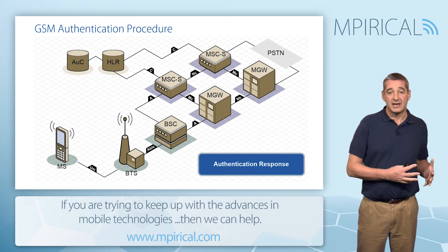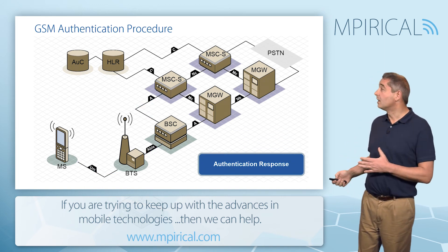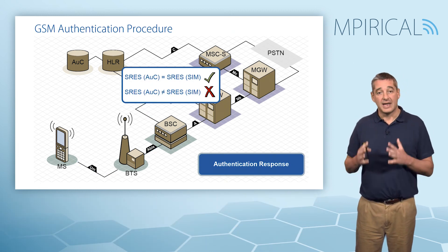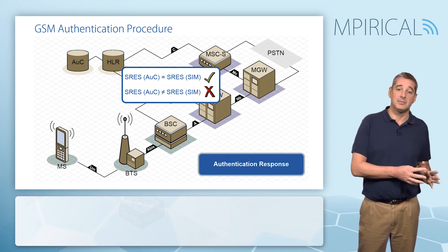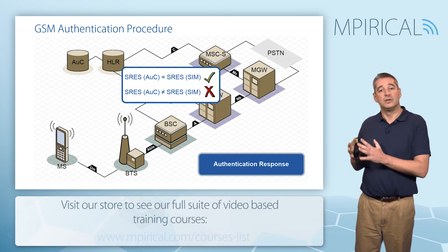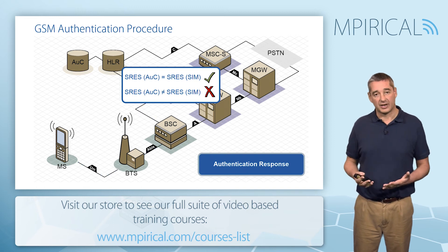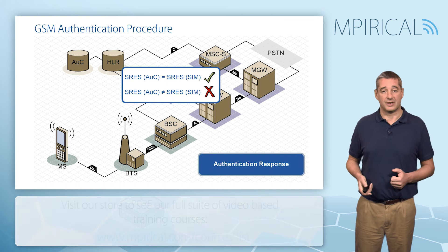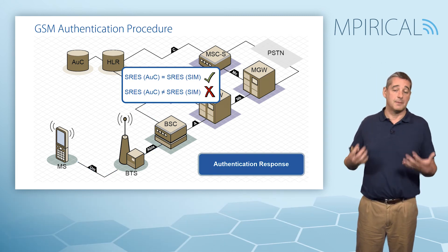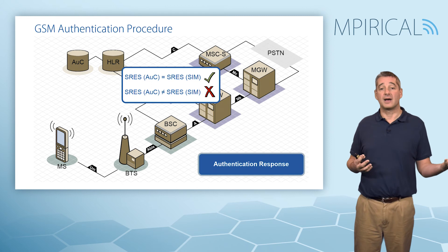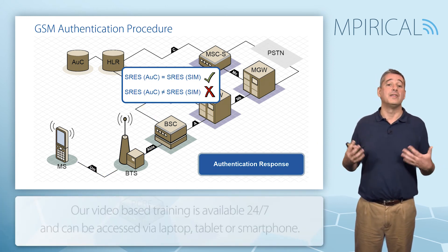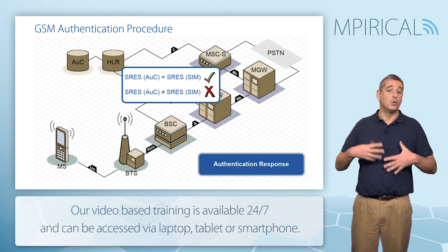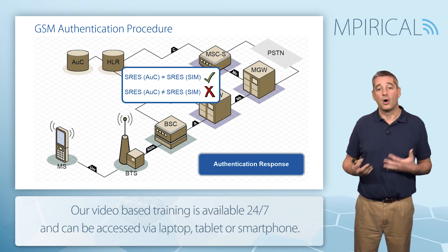The SRES is passed all the way back up to the MSC server, where a comparison is carried out: is the SRES generated inside the SIM card equal to the SRES generated inside the authentication center? If they are, then the phone has been successfully authenticated. If they are not, it is typically because the KI values or the A3 algorithms are not consistent — and since these are secret numbers, that would suggest a cloned or false SIM card.